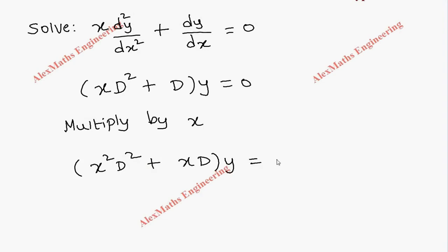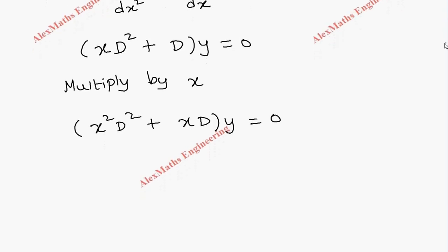This is of the form Euler's type where we have to give substitution x is equal to e power z or z is equal to log x.